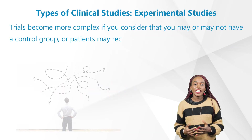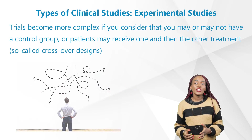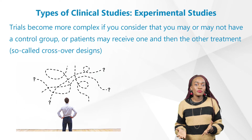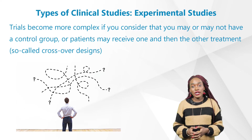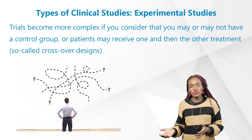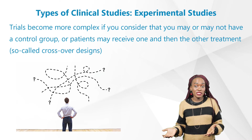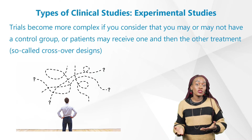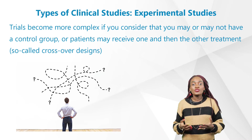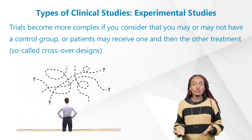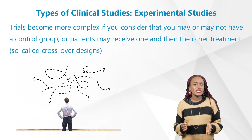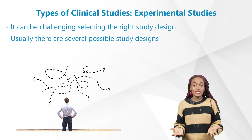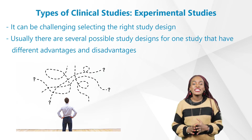In many cases trials become more complex. You may or may not have a control group, or patients may receive one treatment and then the other — so-called crossover designs. You could even have multiple doses, and partway through the study stop everyone but one arm. As you can see, there are several study designs, and it can be challenging selecting the right one for your clinical trials.